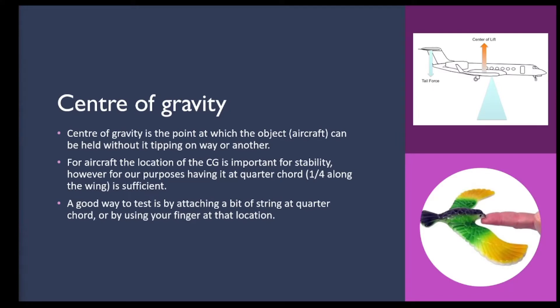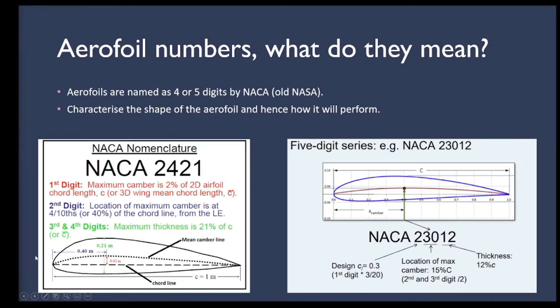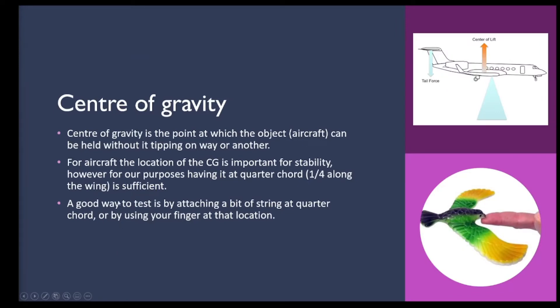The centre of gravity is the point on the aircraft where it can be held without tipping one way or another — very important for stability. As lift increases, the centre of pressure moves forward; if it moves too far ahead of the CG it causes stability problems. For our purposes we'll deal with it at quarter chord — about one quarter along the airfoil length. A good way to test this is attaching a string above that quarter chord point or placing your finger below it to see if it balances front or back.